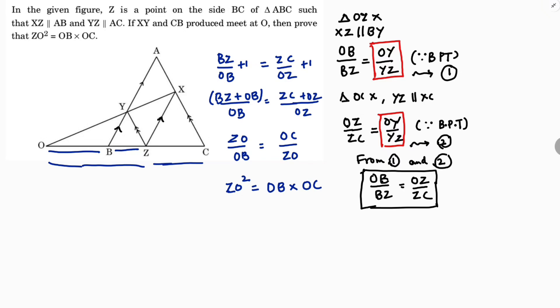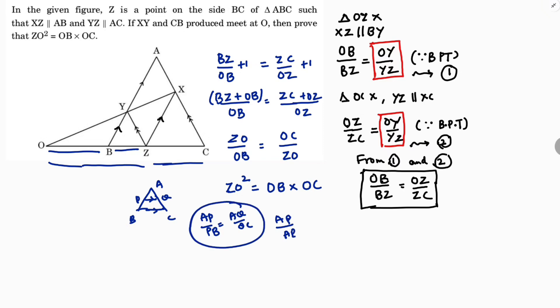Whenever lines are parallel, apply BPT. When you need the full part — for example, in triangle ABC with points P and Q parallel — you get AP by PB equals AQ by QC from BPT. But if you want the full AB, write invertendo, then add 1, then simplify, then take the reciprocal to get the full part. In this way, we simplify this proof. Thank you for watching. Please subscribe to my channel.